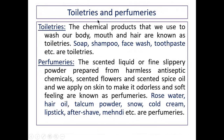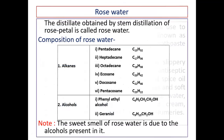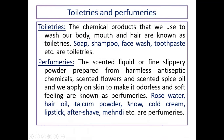A very important point: toiletries and parfumeries. The chemical products that we use to wash our body, mouth, or hair are known as toiletries — soap, shampoo, face wash, toothpaste, etc. But the scented liquid or fine slippery powder prepared from harmless antiseptic chemicals, scented flowers, and scented spice oil, which we apply on the skin to make it odorless and give a soft feeling, are known as parfumeries. It may be hair oil, talcum powder, rose water, snow, cold cream, vanishing cream, aftershave lotion, lipstick, henna paste, etc.